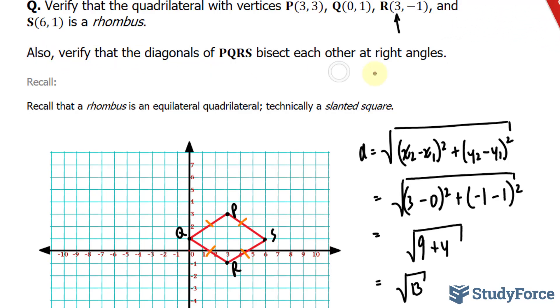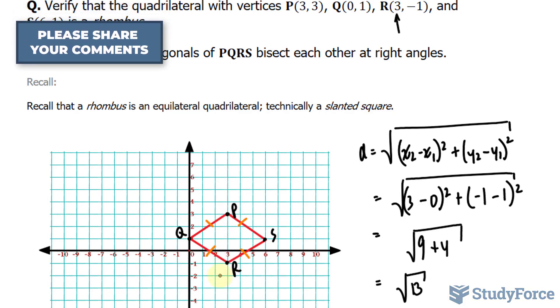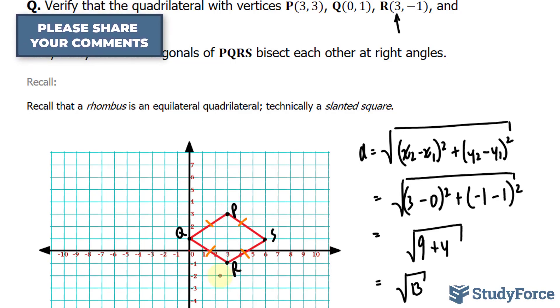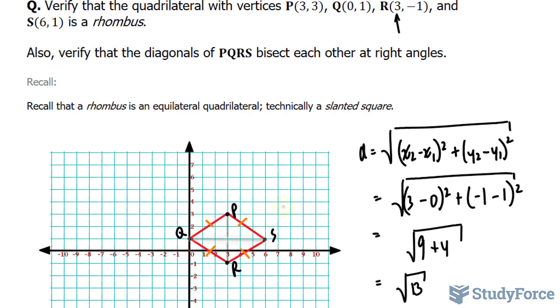Now we can move on to this part. So verify that the diagonals of PQRS bisect each other at 90 degree angles. A diagonal is simply a line that connects non-adjacent vertices. Take, for example, the vertex Q. If I were to extend a line from Q to S, that would be considered a diagonal. And similarly, extending a line from P to R is also considered a diagonal. Let me go ahead and fill in those lines. The green lines you see now on your screen represent the diagonals. And we have to determine that this and this are at 90 degree angles. It appears to be visually, but we have to prove it mathematically.